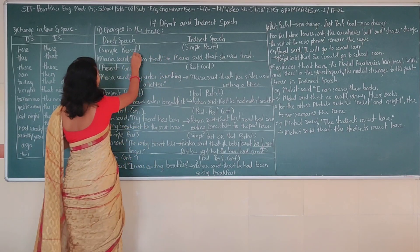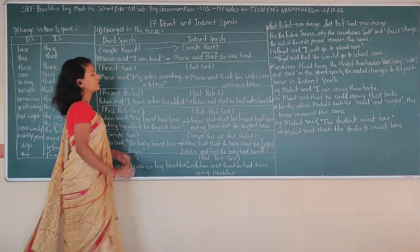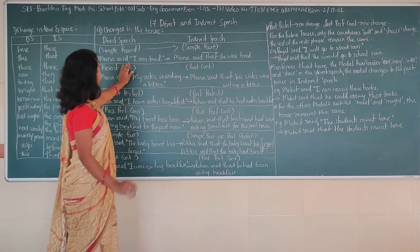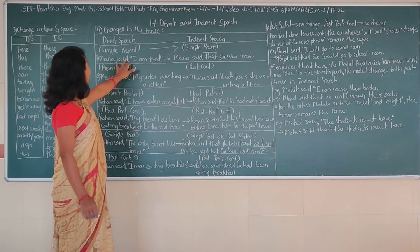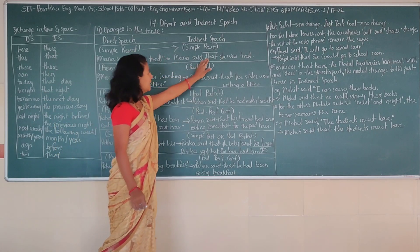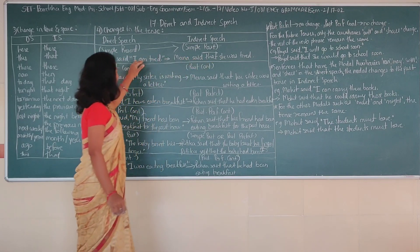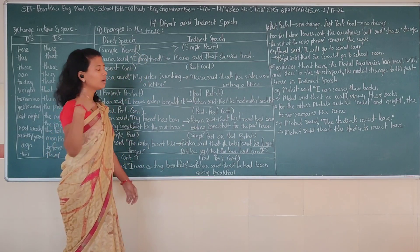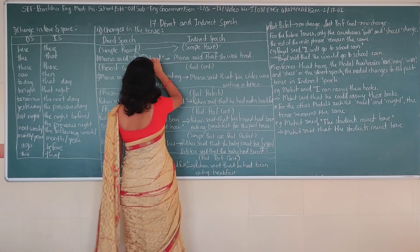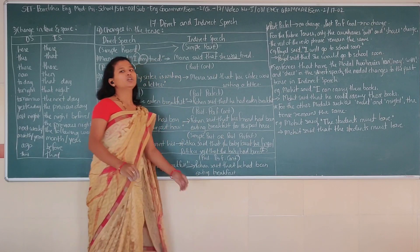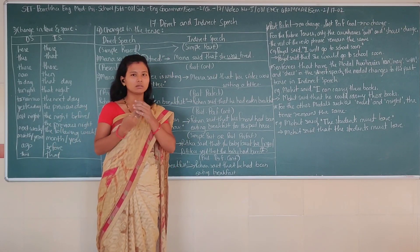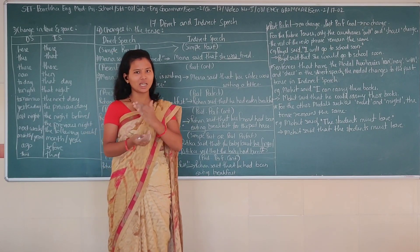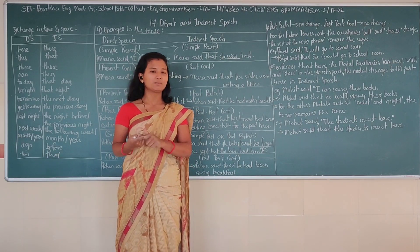Simple present tense will change to simple past tense in indirect speech. So 'Meena said' — instead of a comma you use 'that' — 'Meena said that'. Then 'I' becomes 'she', and 'am', which is present tense, changes to past tense — 'am' becomes 'was'. So: 'She was tired.' Simple present tense will change to simple past tense.